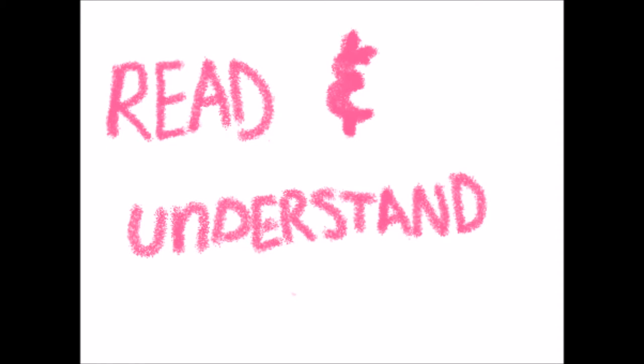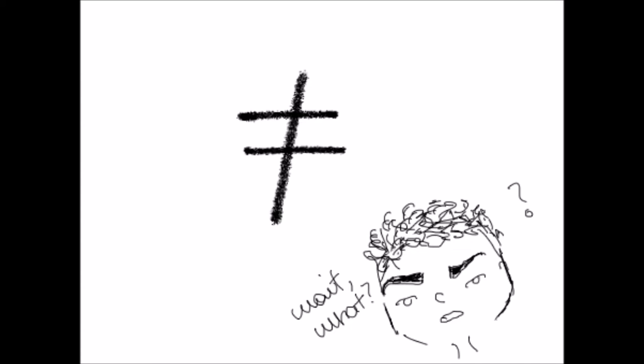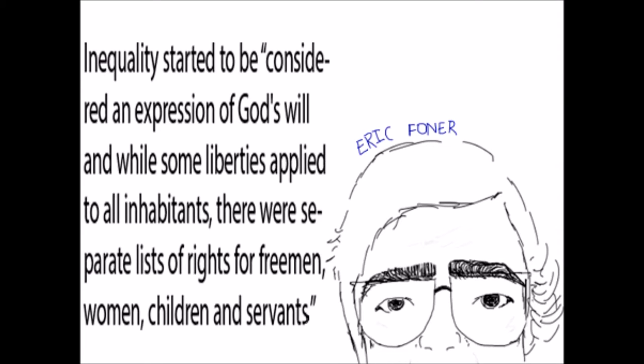Now, let's analyze the second reason. Even though in the beginning Puritans truly believed in equality and fostered it when they decided that they wanted everyone to be able to read and understand the Bible, when they got to the colony, equality didn't go quite equal for everyone. According to the historian Eric Foner, inequality started to be considered an expression of God's will, and while some liberties applied to all inhabitants, there were separate lists of rights for freemen, women, children, and servants.